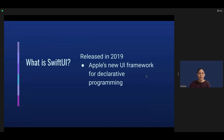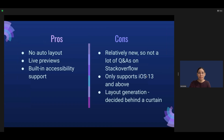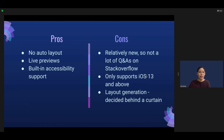Next, let's go into SwiftUI. So what exactly is SwiftUI? It was released in 2019, and it's Apple's relatively new UI framework for declarative programming. On the pros: there's no auto layout, which can be quite a task to undertake. There's also live preview, so you can see your changes in real time for the most part. And there's built-in accessibility support, which I'll go into detail on later.